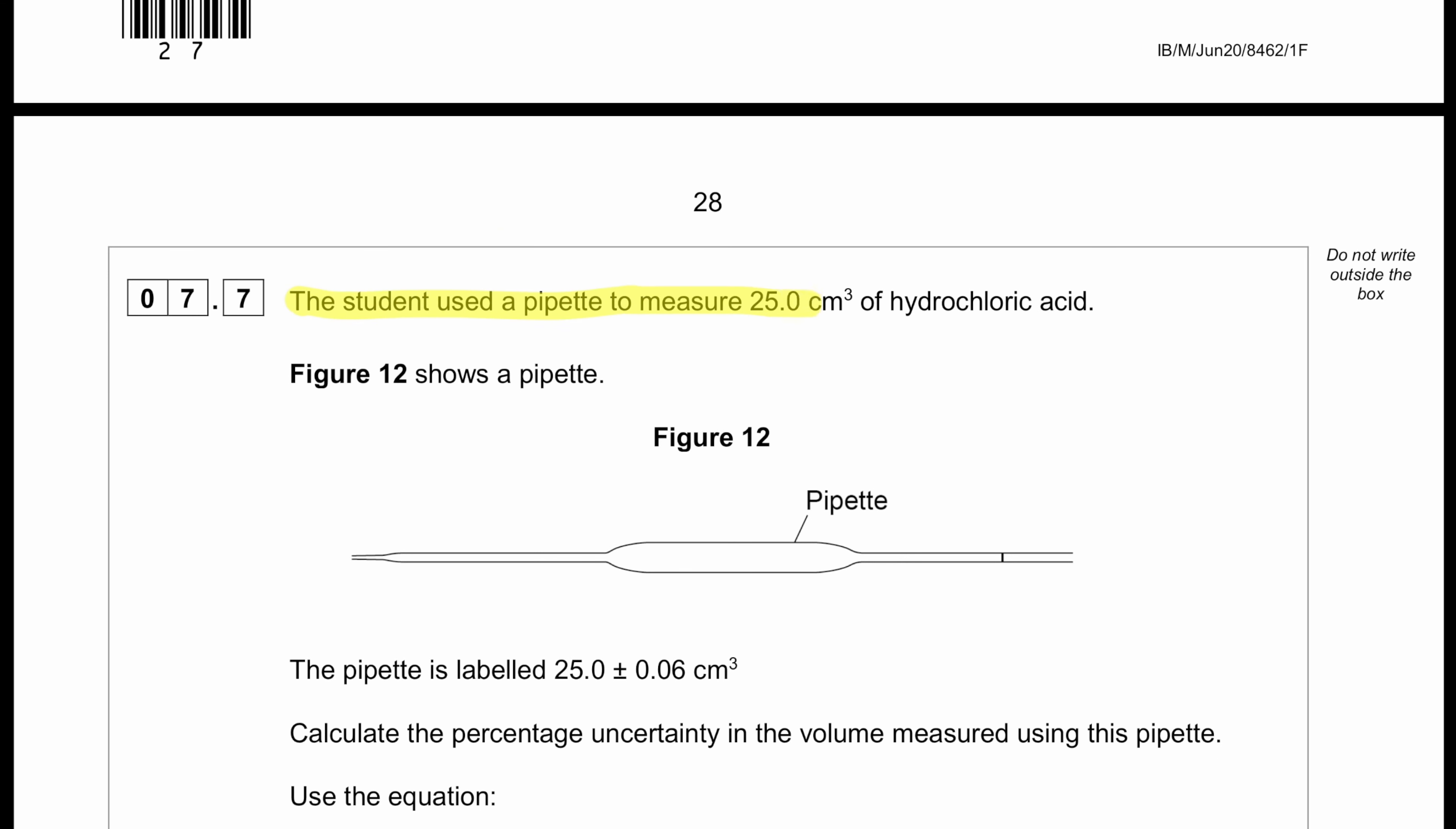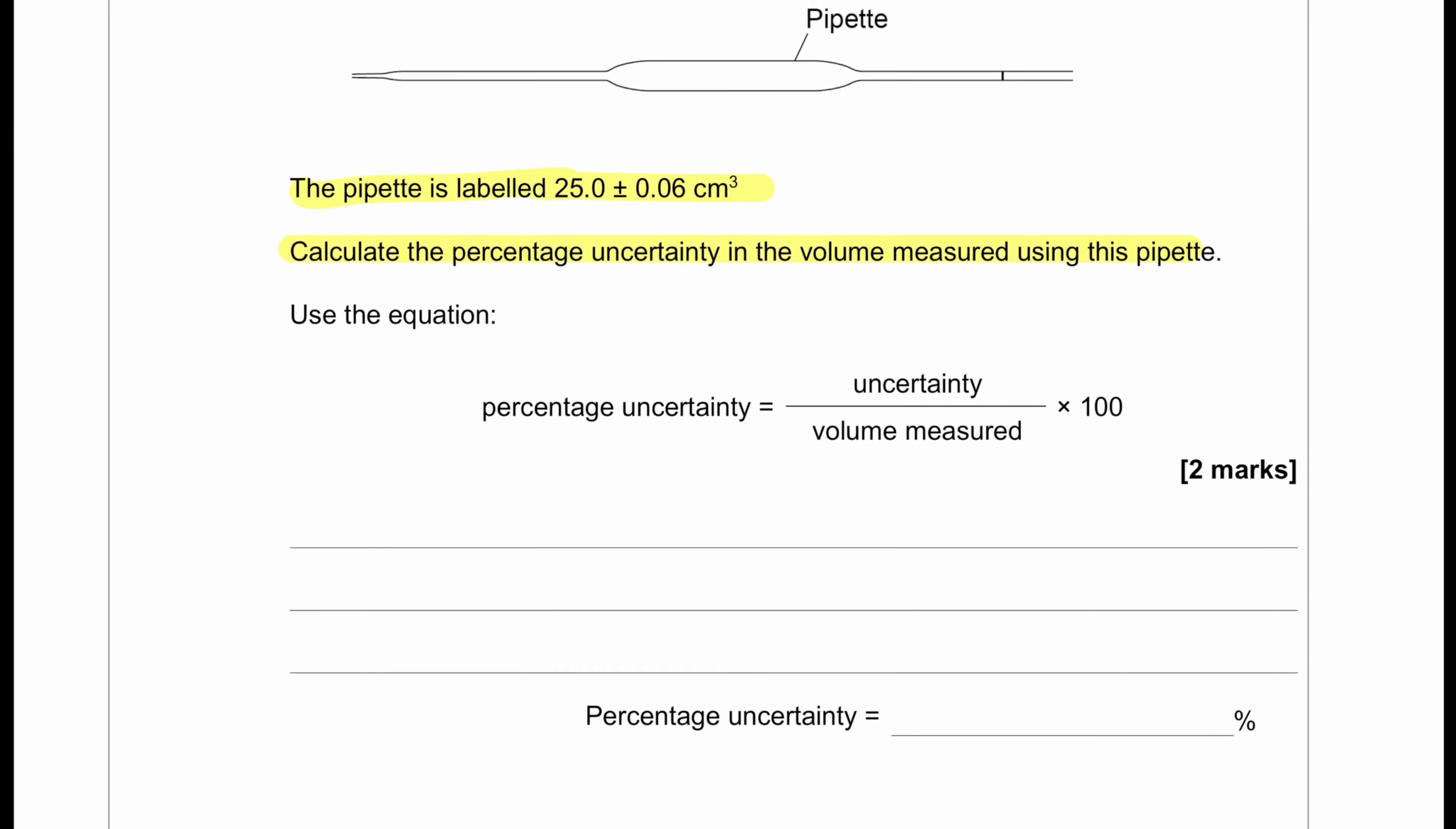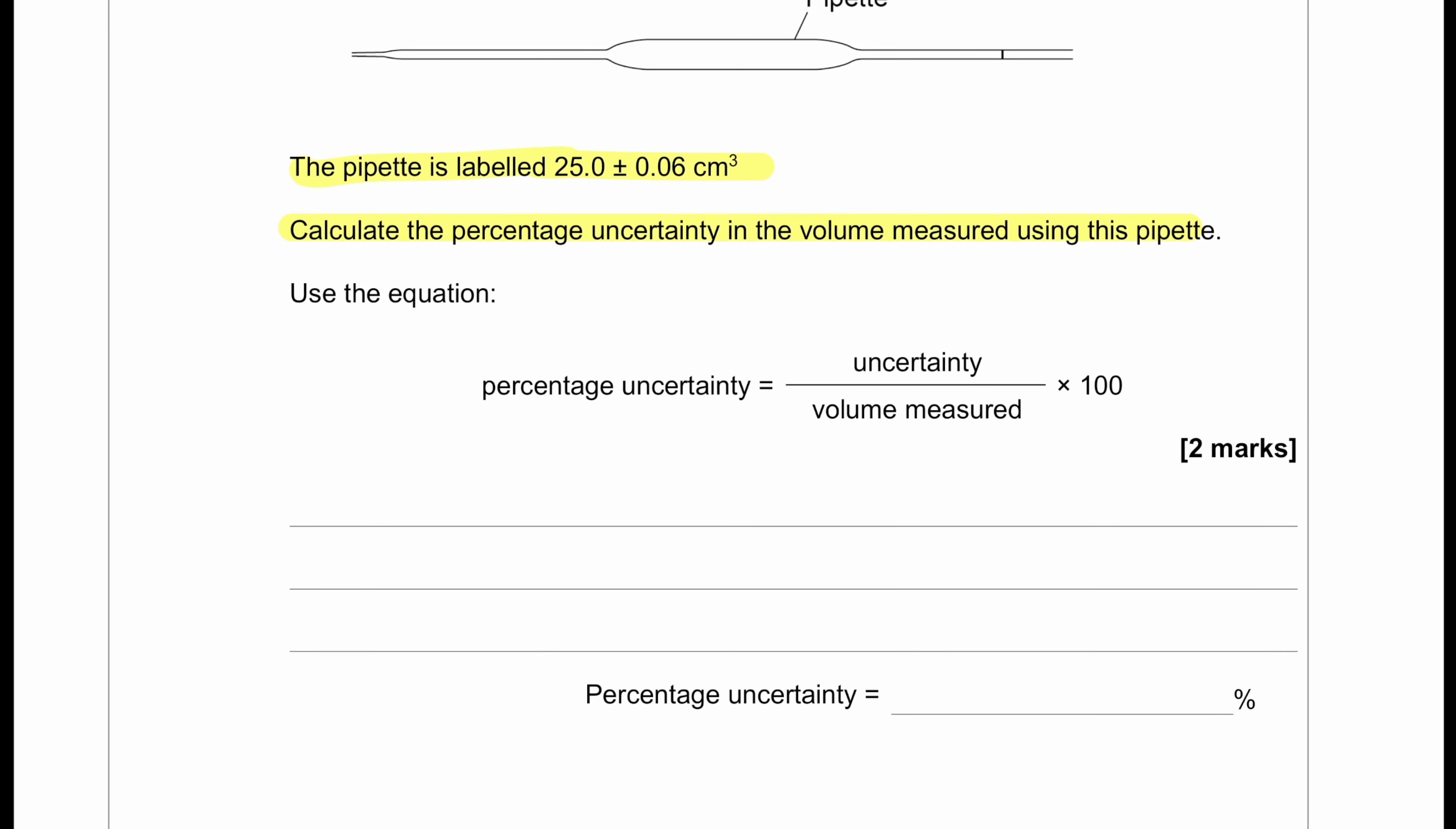The student used a pipette to measure 25 cm³ of hydrochloric acid. Figure 12 shows the pipette. The pipette is labeled 25 ± 0.06 cm³. Calculate the percentage uncertainty in the volume measured using this pipette. When we are measuring percentage uncertainty, then we'll have to remember the percentage: uncertainty given 0.06, and then the total volume that we are measuring is 25, multiplied by 100. This gives us 0.24 percent. So this is the percentage uncertainty when using a pipette of 25 cm³.